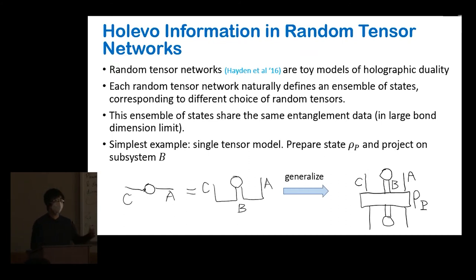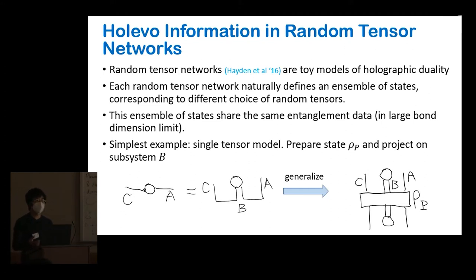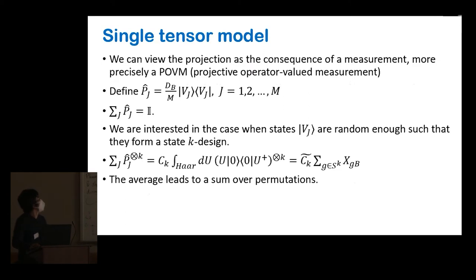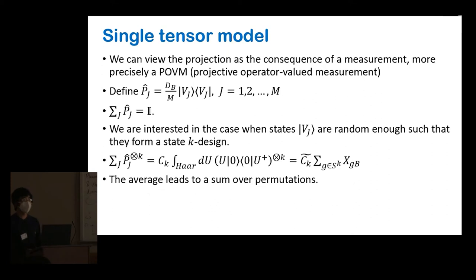If I take the same rho_P and project it on different random states, that's an ensemble. This ensemble has the property that each member, in the large bond dimension limit where entropy is self-averaging, all look the same in terms of the RT formula — they all correspond to the same graph geometry. But they are very different states; if you calculate their overlap, it's very small. It's a generalization of random states with very small overlap but very similar entanglement properties. We can think of the projection as a consequence of measurement — this is similar to what was discussed in the previous talk. Physically, I have this bigger Hilbert space rho_P. In the single tensor example, I'm considering there is only one bulk vertex and applying one measurement on B — a system with A, B, C three parts, applying a measurement on B which is a fully random projector, so after the measurement you know the state of B completely.